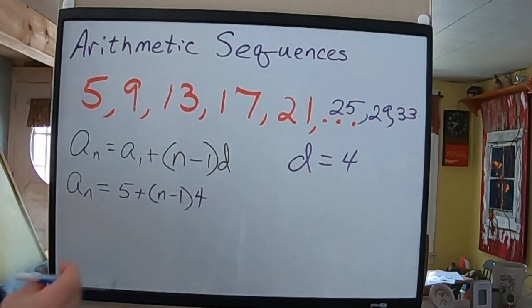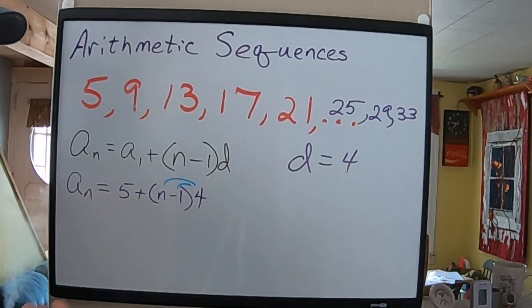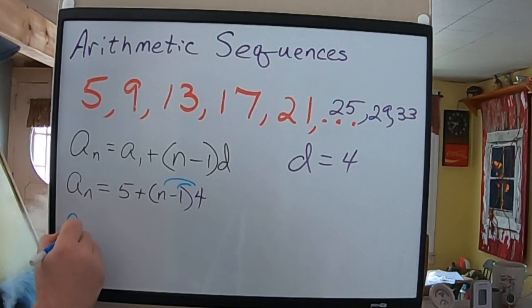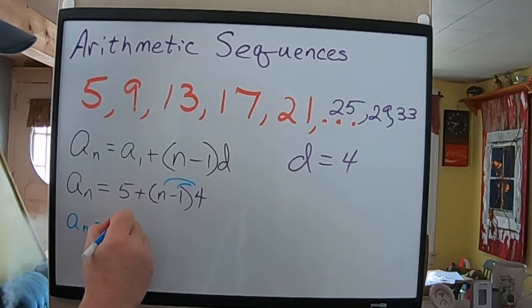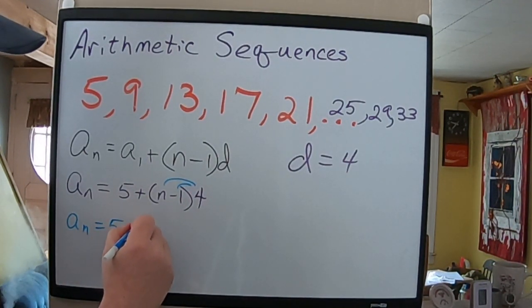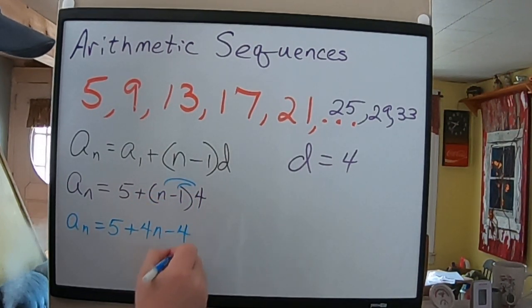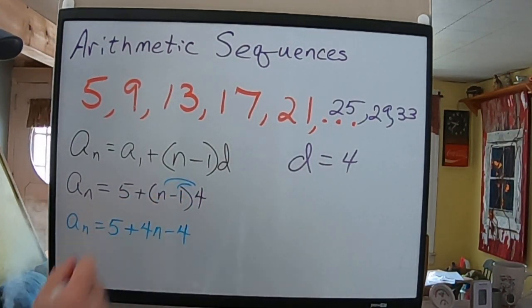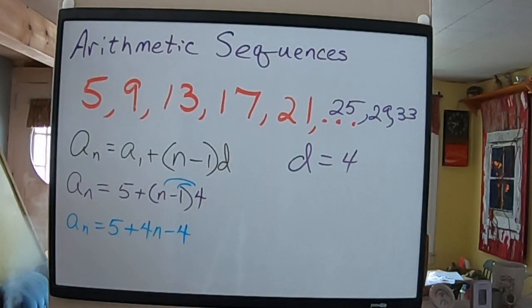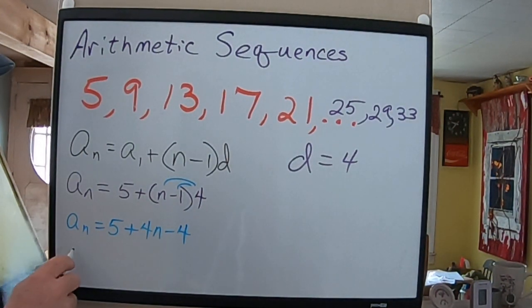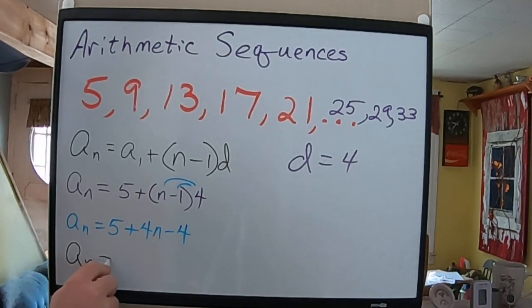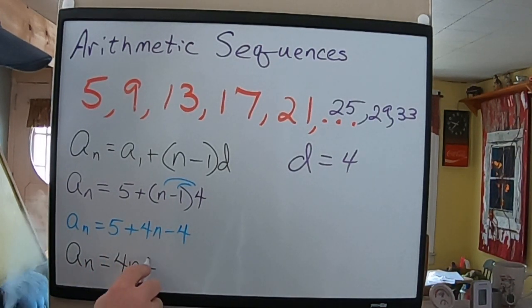So, we're going to distribute the 4, just to make this simplified. A sub N equals 5, plus 4N minus 4. I distribute the 4 here and here, and then I just combine my like terms. So, A sub N equals, I'm going to put my 4N first, don't have to, but it's easier, and then 5 and negative 4 make positive 1.